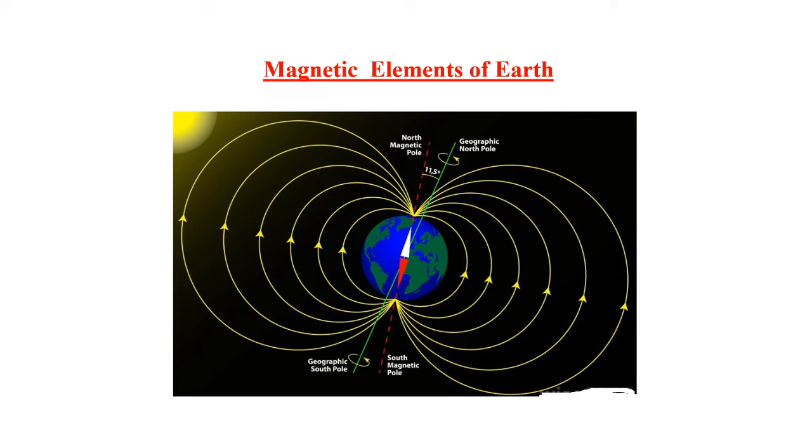The magnetic north pole is located at 79.74 degree north latitude and 71.8 degree west longitude. Similarly, the magnetic south pole is located at 79.74 degree south latitude and 108.22 degree east longitude.